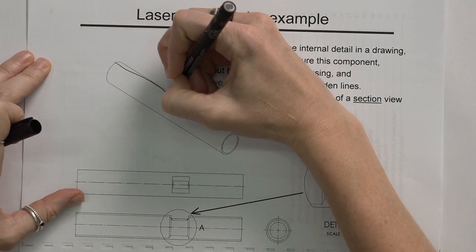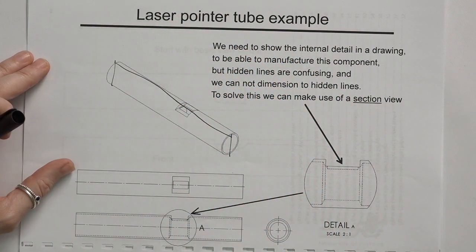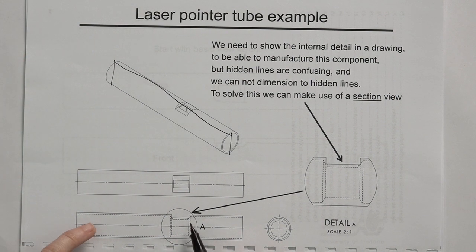But if we start to section something, we literally cut through this component, through the middle in this case, and we take the whole front portion of that away. Which means that now the hidden information that we saw on this view becomes actual information that we see and it's not hidden anymore.